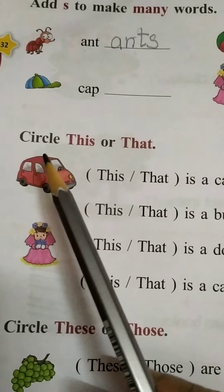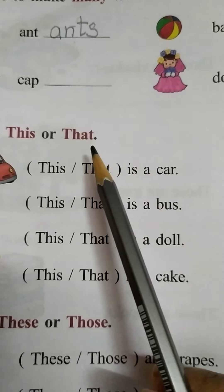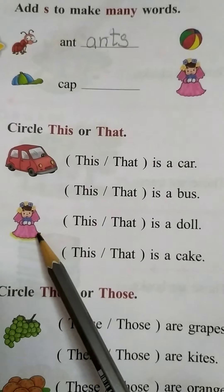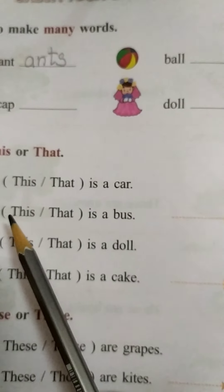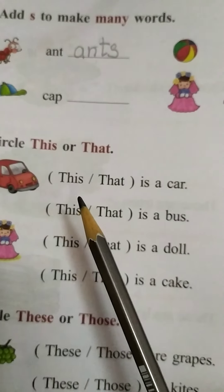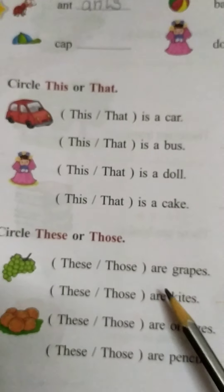Next children. Circle this or that. Here the things are given. You need to—which word is correct? You need to circle the words. And you can write in your notebooks.